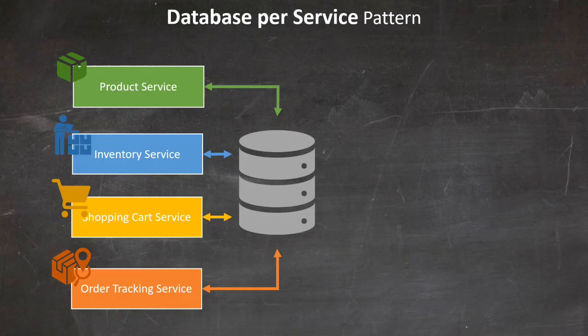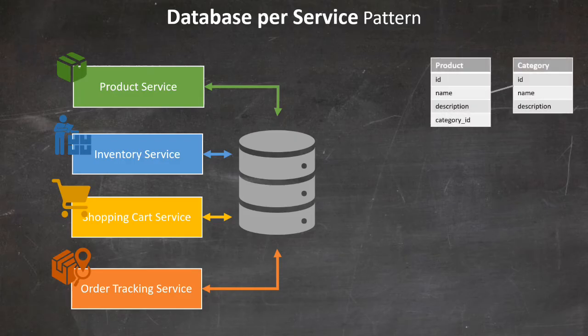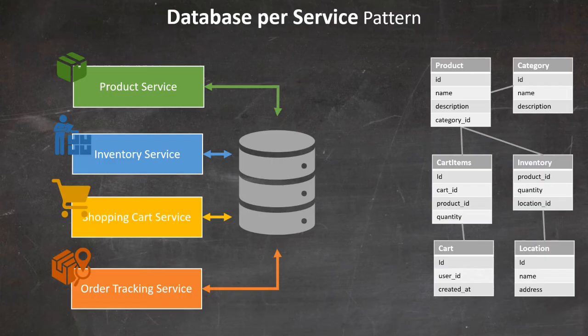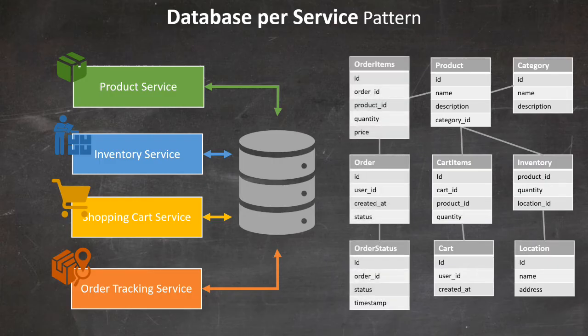To proceed effectively, the first step is to initiate a data governance program. Assuming you have a good handle on your data, you should be able to clearly identify which service is responsible for creating data and which services consume it. In this example, the product service owns the product and category tables. The inventory service owns the inventory and location tables. The shopping cart service owns the cart and cart items tables. And the order tracking service owns the order, order item, and order status tables. With this understanding, you can begin splitting your database schema into smaller, specialized databases that will be managed independently by each service.